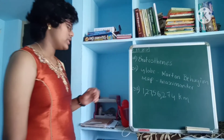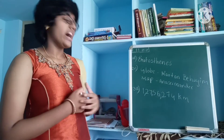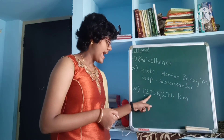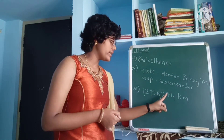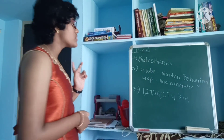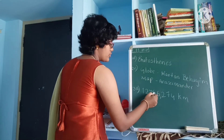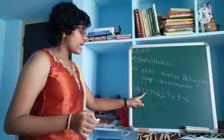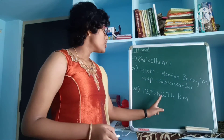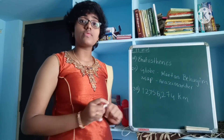The third question: what is the size of the earth? The answer is 1 crore 27,56,274 kilometers. In the international system, that is 12,756,274 kilometers.